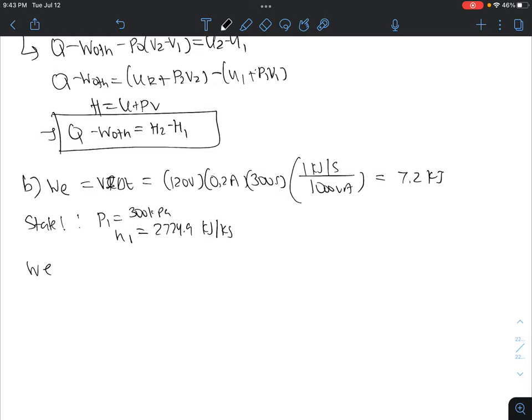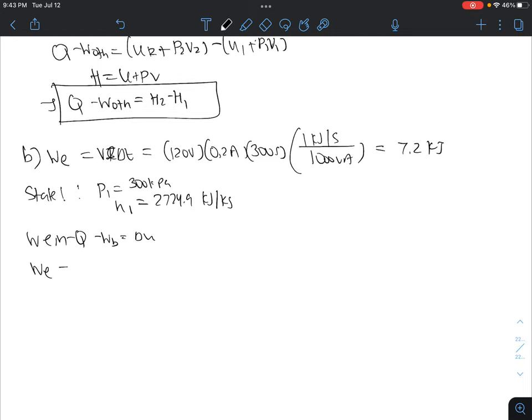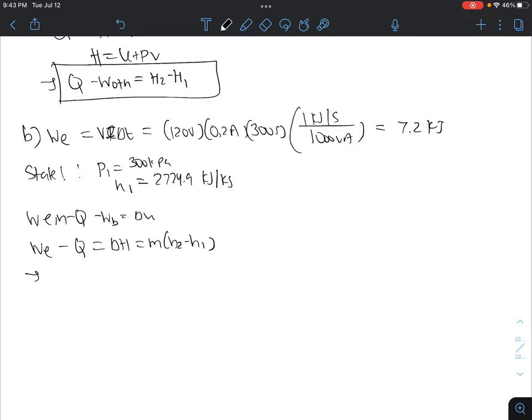Now we have work E in minus Q out minus WB equals delta U. And so we can plug in work E minus Q equal to delta H, which is M times H2 minus H1. So we have 7.2 kilojoules minus 3.7 kilojoules equal to 0.025 kilograms times H2 minus 2724.9. And so our H2 is 2864.9 kilojoules per kilogram.